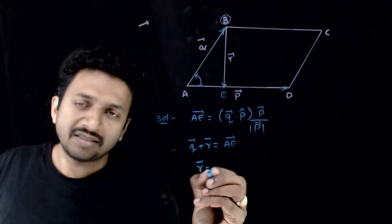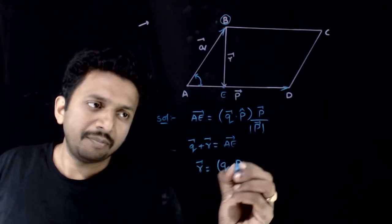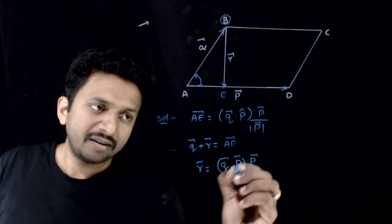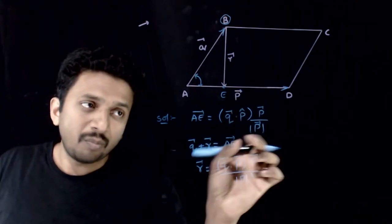So R bar is equal to AE bar, that is Q dot P into P bar by mod P whole square, because P cap is again P bar by mod P bar.